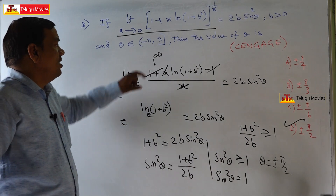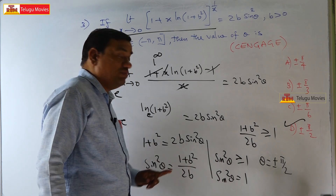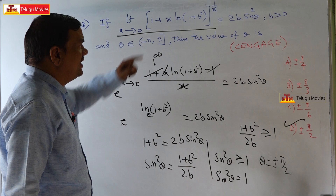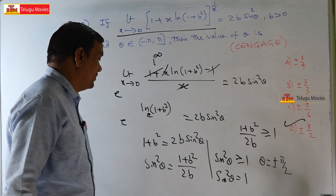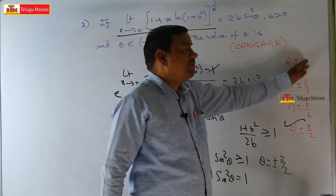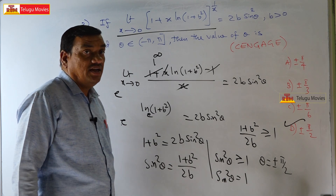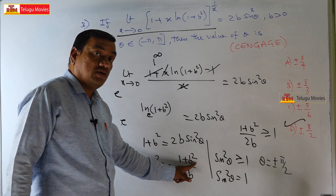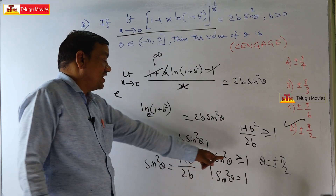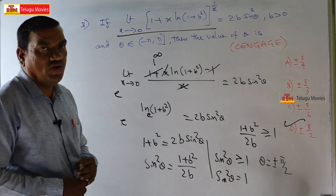This problem is based on the 1^∞ model. The key thing to remember is that (1+b²)/(2b) is always ≥ 1. You can also verify by option checking: substituting b = 1 gives (1+1)/(2) = 1, confirming sin²θ = 1 is the only possibility. I hope you understand the solution. Let us go to the next problem.